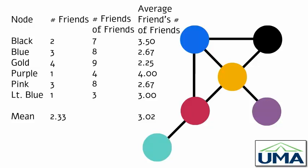Because one of them has three friends and the other has four friends, black's friends on average — the average friend of black — has 3.5 friends. We can do that for every node in this network and then calculate the mean of all those values. It turns out that in this network the average node has 2.33 friends, but the average number of friends of a node's friends is 3.02. In this network, as in most social networks, your friends have more friends than you do.